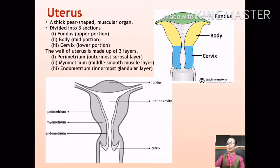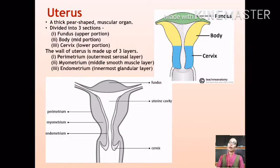The two layers in the middle region made up of smooth muscles form the myometrium. The inner lining of the uterus, composed of numerous glands, is called the endometrium. The superficial lining of the endometrium is shed during menstruation in a non-pregnant female, as we have learned in the menstrual cycle.